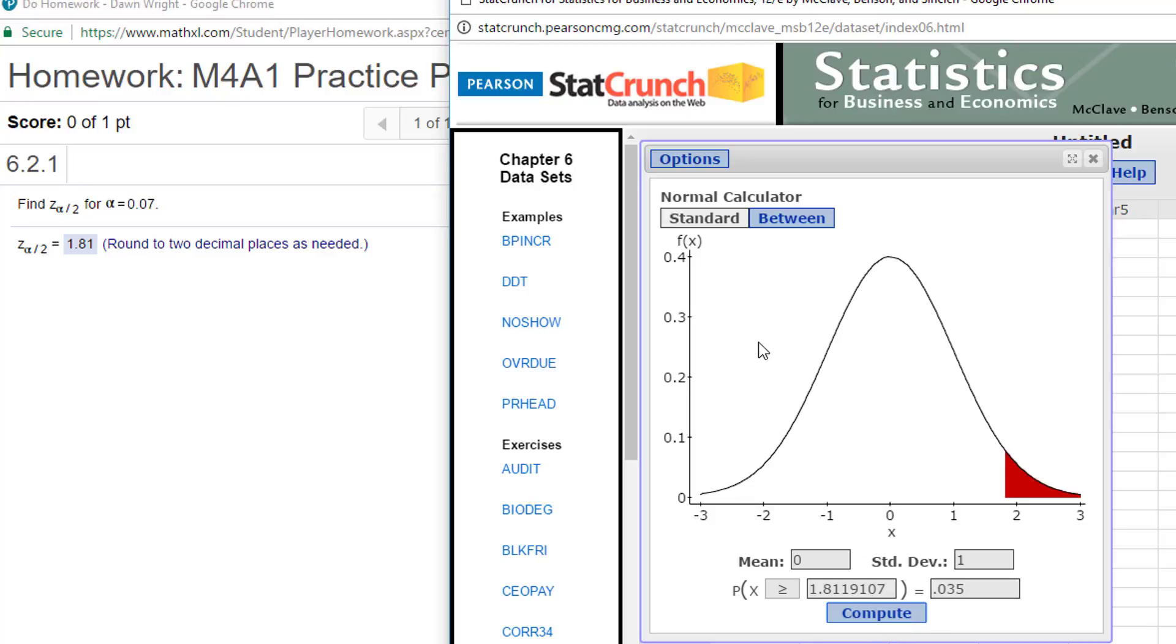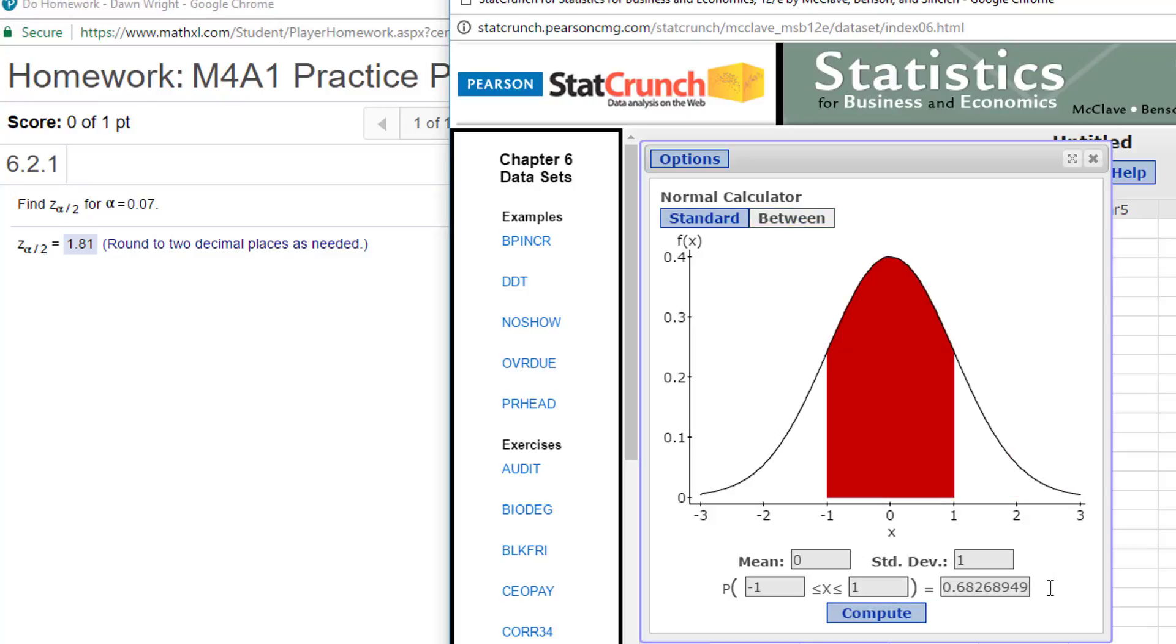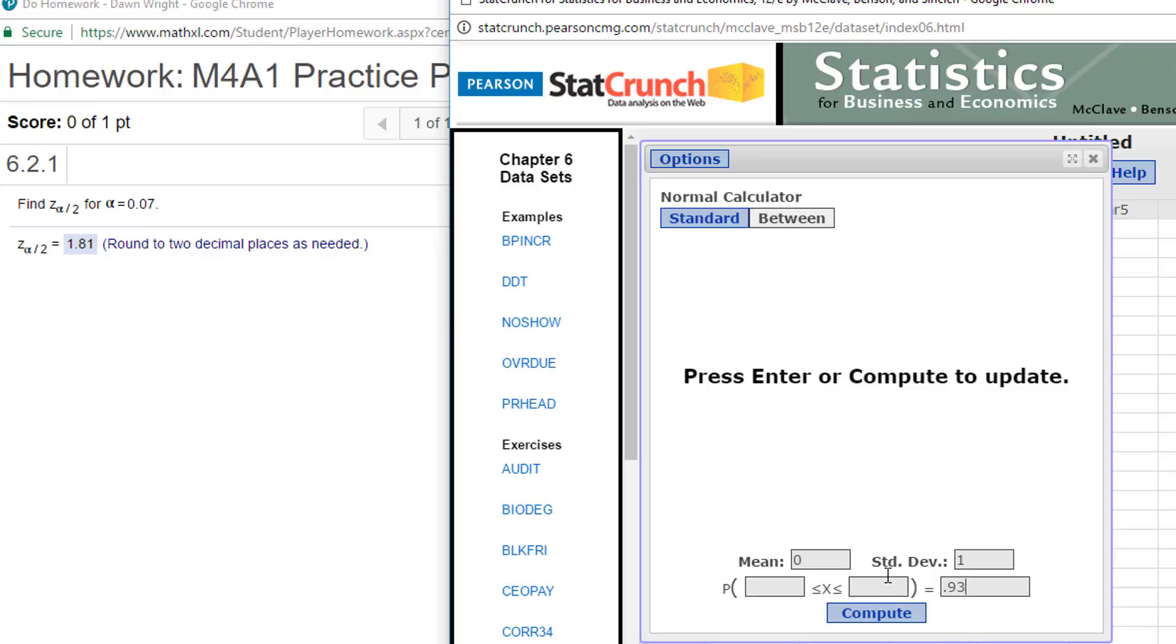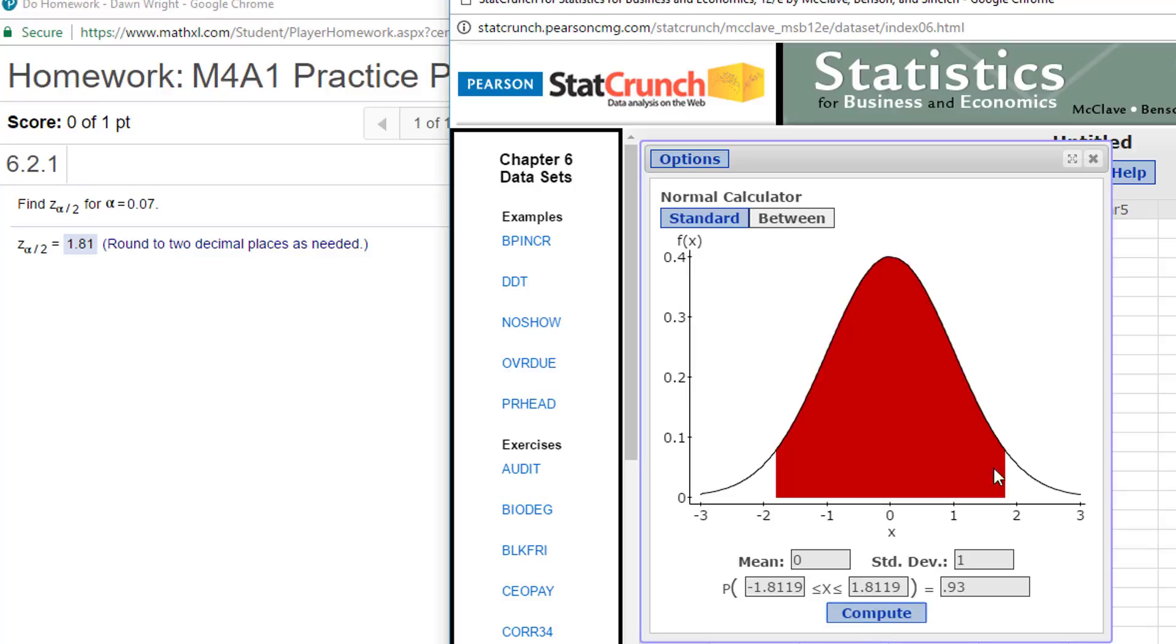What I like to do when I'm given alpha over 2 problems is use the between calculator. And if alpha is 0.07, that means the confidence level C is 1 minus alpha, which would be 0.93, which is the area between the plus and minus Z.